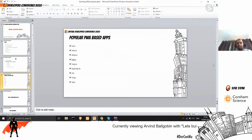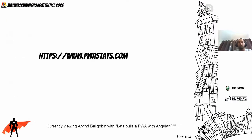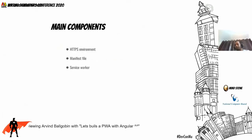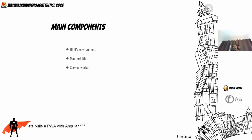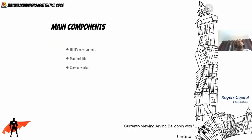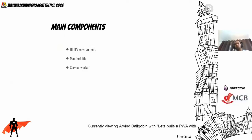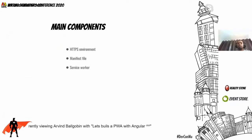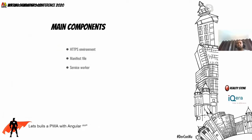A progressive web app requires a few smart add-ons. First, we need a secure environment. You can't host a progressive web app on HTTP only — because of the service worker and security issues, they've incorporated a rule that it will only run on a secure, HTTPS environment.